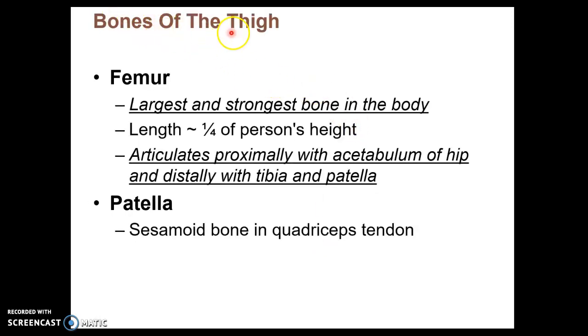We'll start with the bones of the thigh, which include the femur and patella. The femur is your thigh bone, the largest and strongest bone in the body. It's a quarter of your height and articulates at the proximal end with the acetabulum, the socket of the pelvic girdle. At the distal end of the femur, it will articulate with the tibia, which is your shin bone, and anteriorly with the patella, being your kneecap.